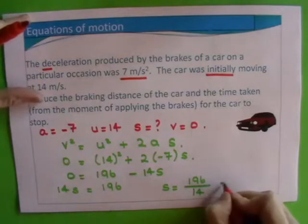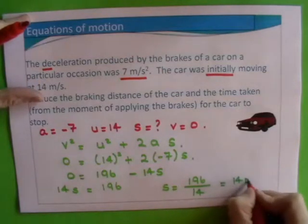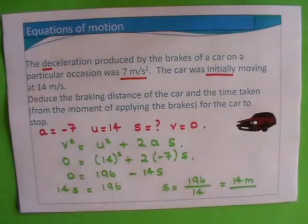And the answer actually comes out as 14 meters. So it takes a car 14 meters to stop when it was initially moving at 14 meters per second.